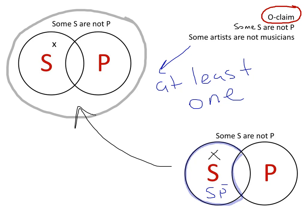We're going to need to know that because when we evaluate categorical arguments and categorical syllogisms, we're going to use these same methods to diagram the premises of these arguments. And then we're going to use that diagram as a visual representation of the argument to determine validity.